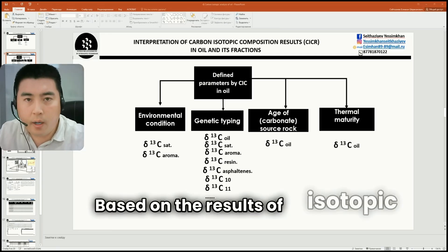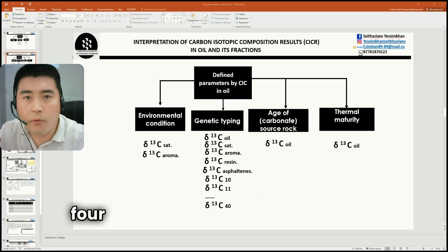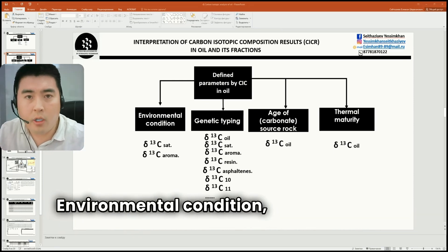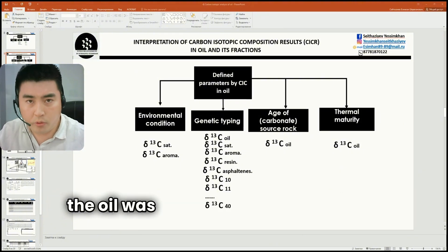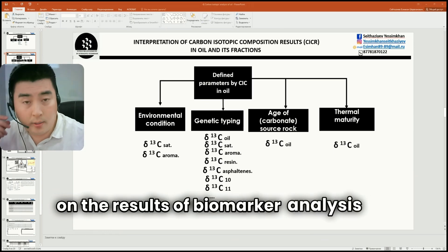Based on the results of isotope composition of carbon in oil and its fractions, four parameters can be determined: environmental conditions, genetic typing, source rock age if the oil was generated from carbonate source rock based on the results of biomarkers, and thermal maturity.